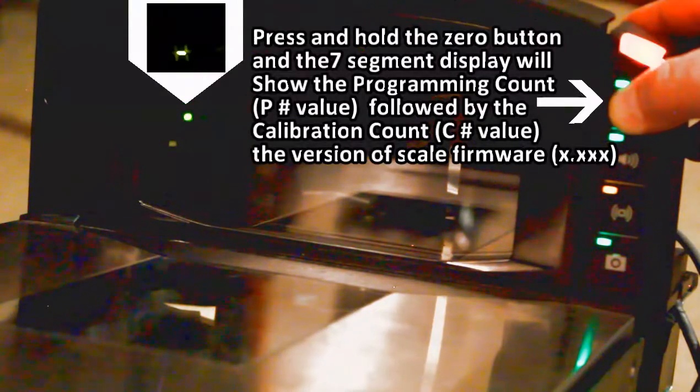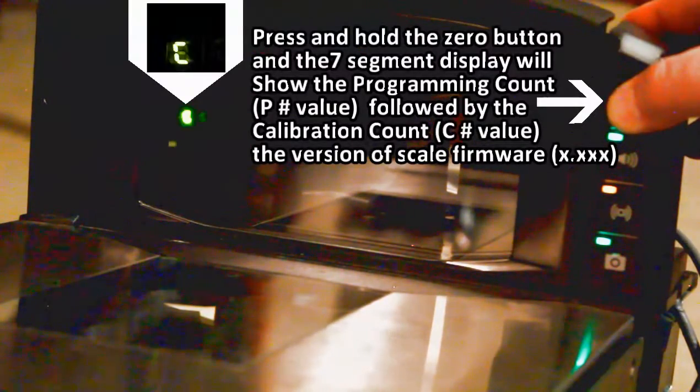You'll see the rotating value starting with the C number, which represents the calibration count, then the P number, which represents the programming count, followed by a numeric and alpha series which is the scale firmware. Then it rotates back through. It's as simple as that.